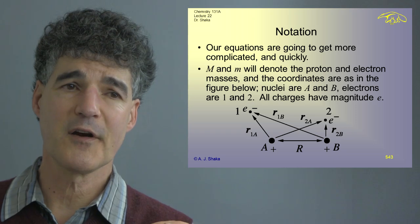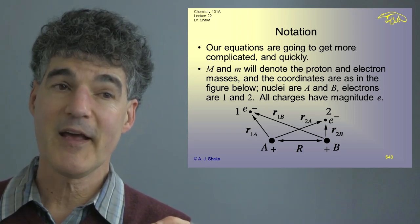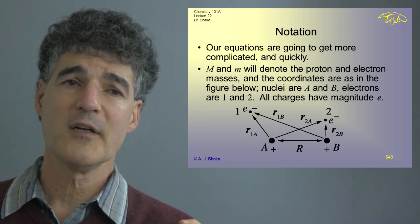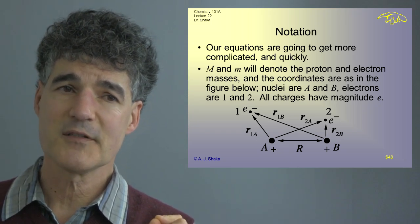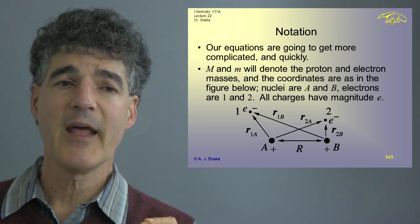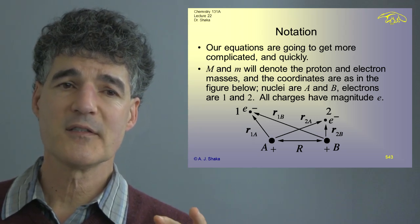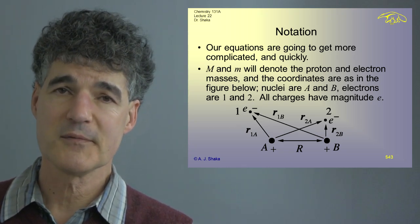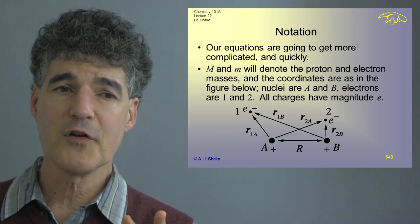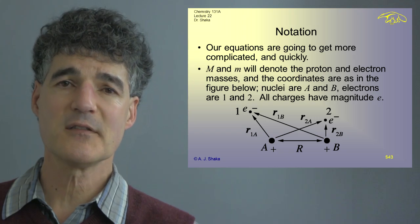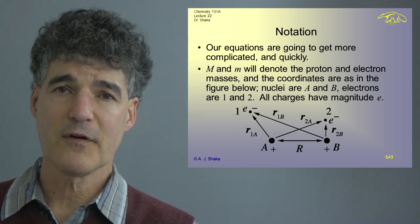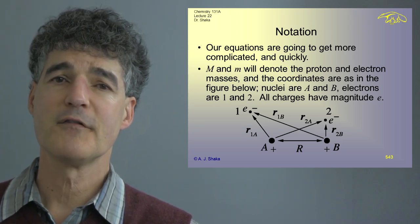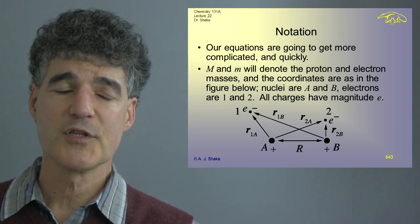I want to talk about our notation. Our equations are going to get more complicated quickly. I'm going to use big M to denote the mass of the proton or nucleus and little m to denote the mass of the electron. Our coordinate system has two nuclei marked A and B. I've put in both electrons, which I call 1 and 2. This is H2, and we're trying to set up how to solve the Schrödinger equation.